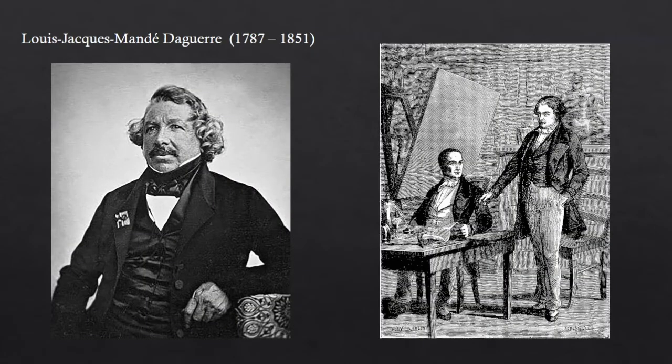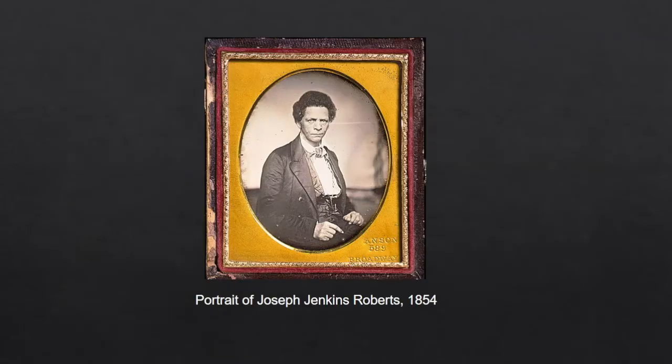In 1829, Niépce collaborated with the French artist and physicist Louis-Jacques Mandé Daguerre to perfect his heliography process. But Niépce died in 1833, and his son Isidore continued the partnership with Daguerre, and in 1839 the daguerreotype was introduced to an amazed and excited public. As I said earlier, people would call it a mirror with a memory. This is a daguerreotype of Joseph Jenkins Roberts from the Library of Congress Prints and Photographs collection online — he's the first and seventh president of Liberia. You can see how detailed the image is.